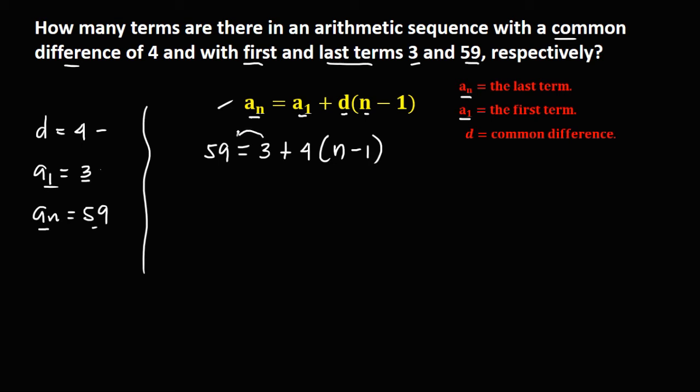Then simplify, so transpose this positive 3, this becomes negative 3, then equals, distribute this positive 4, so positive 4 times n, that's positive 4n. Positive 4 times negative 1, that's negative 4.